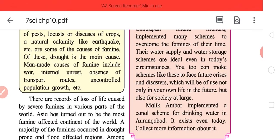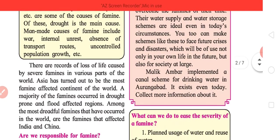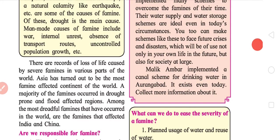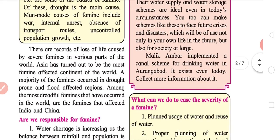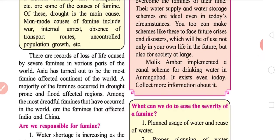This resulted in water shortage. Look at Bangalore, it traditionally had a lot of lakes to supply water, but now water is practically of no use in Bangalore. Mind it, these are not droughts but they may result in it. You can make a scheme like this to face future crisis and disaster which will be of use not only in your own future but society at large. Malik Ambar implemented a canal scheme for drinking water in Aurangabad.